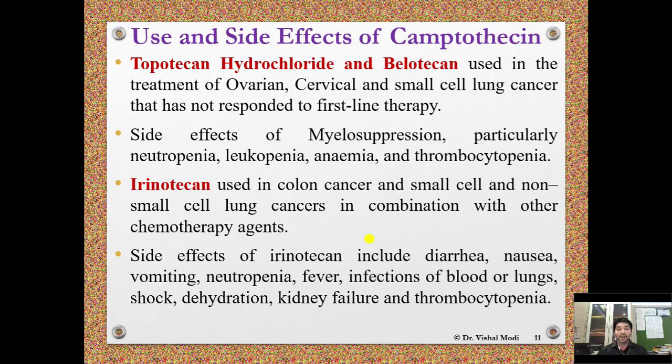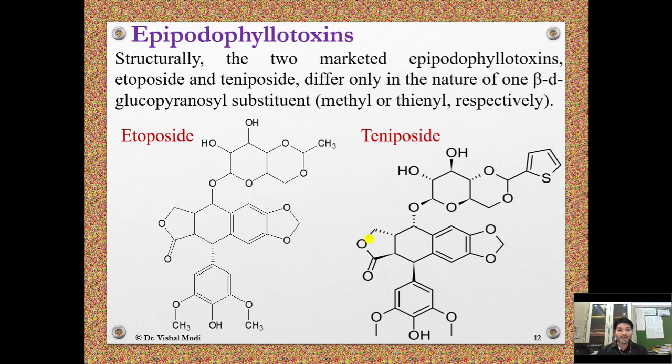The second class of topoisomerase inhibitors is the epipodophyllotoxins. The two marketed epipodophyllotoxins, etoposide and teniposide, differ only in the nature of one beta-D-glucopyranosyl substituted methyl or thienyl group respectively. In etoposide there is a methyl substitution while in teniposide there is a thiazole ring substitution.